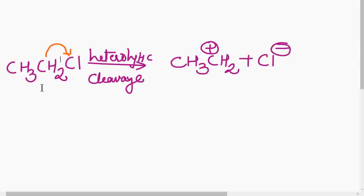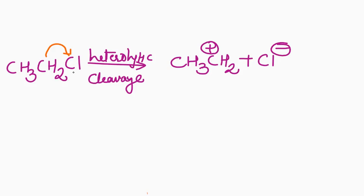In this example, there is CH3CH2Cl, that is ethyl chloride. Chlorine being a more electronegative atom, the shared pair of electrons will get shifted towards the chlorine when the hydrolytic cleavage takes place. So the chlorine will have a negative charge and the carbon will have the positive charge.